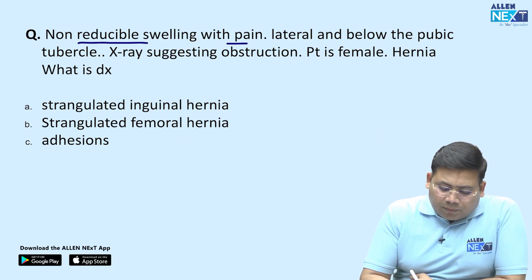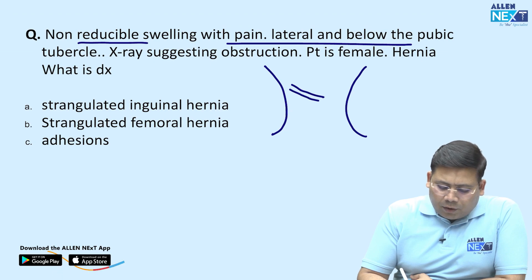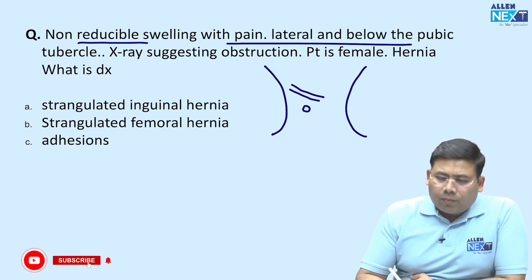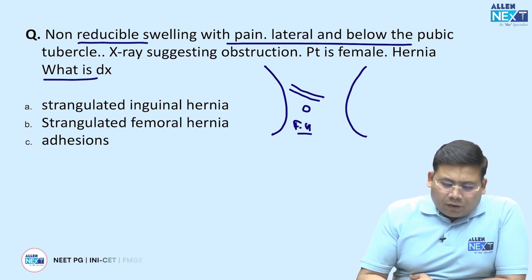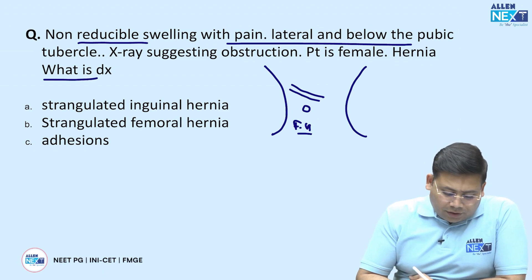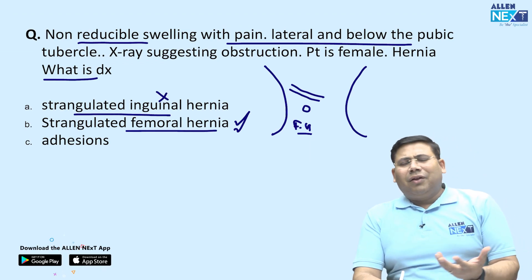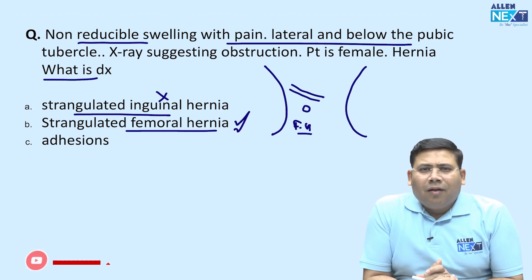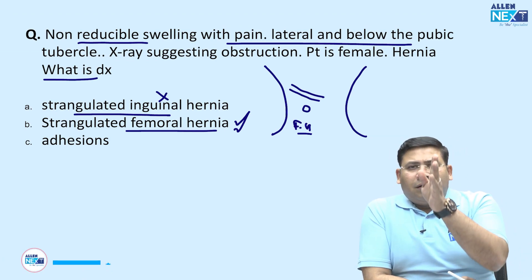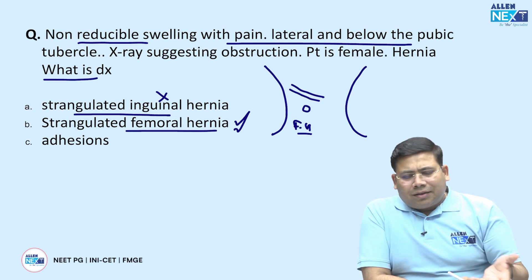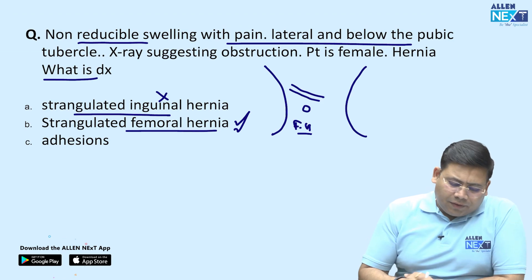A non-reducible swelling with pain lateral and below the pubic tubercle. Remember, this location — below and lateral to the pubic tubercle — is a potential site for femoral hernia. The X-ray also shows obstruction. The diagnosis is not strangulated inguinal hernia; it is strangulated femoral hernia. Very easy question — it is either below and lateral or medial and above.